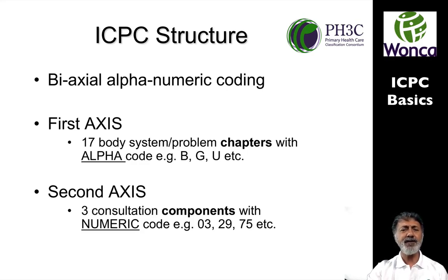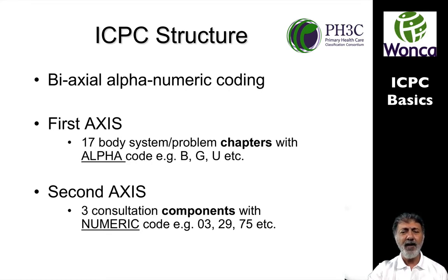ICPC has a particular structure. It's called a biaxial alphanumeric coding. So the first axis — the alpha — is where you have chapters. There are 17 body systems and problem chapters in the ICPC, labeled B, G, and other alphabets. The second axis is the consultation components, and these have the numeric codes which have specific disease entities or complaints assigned to them.